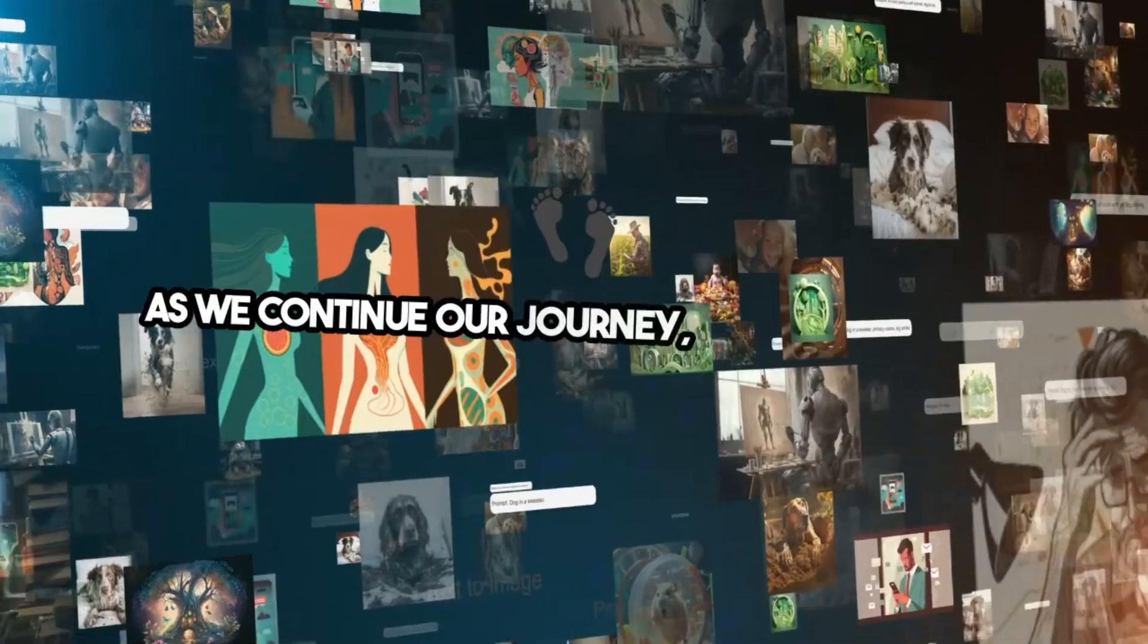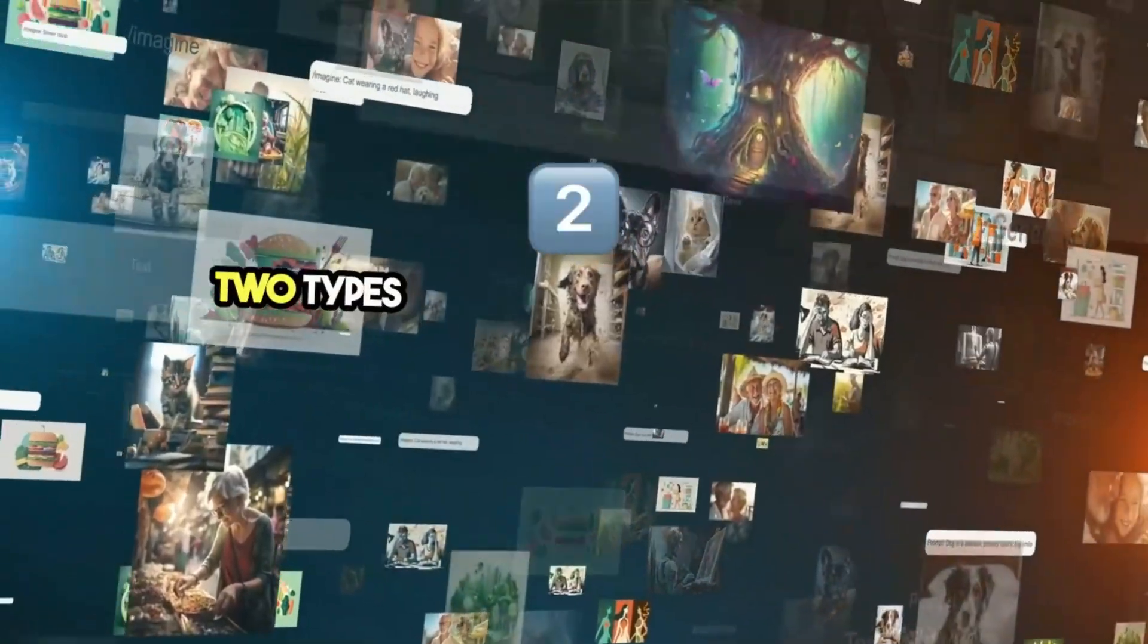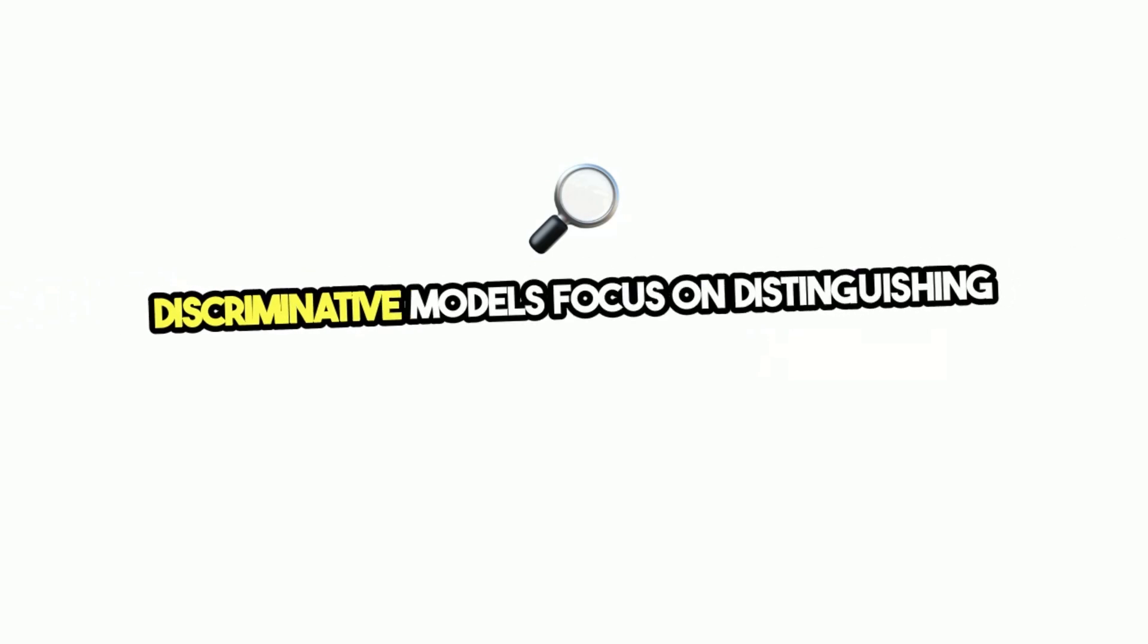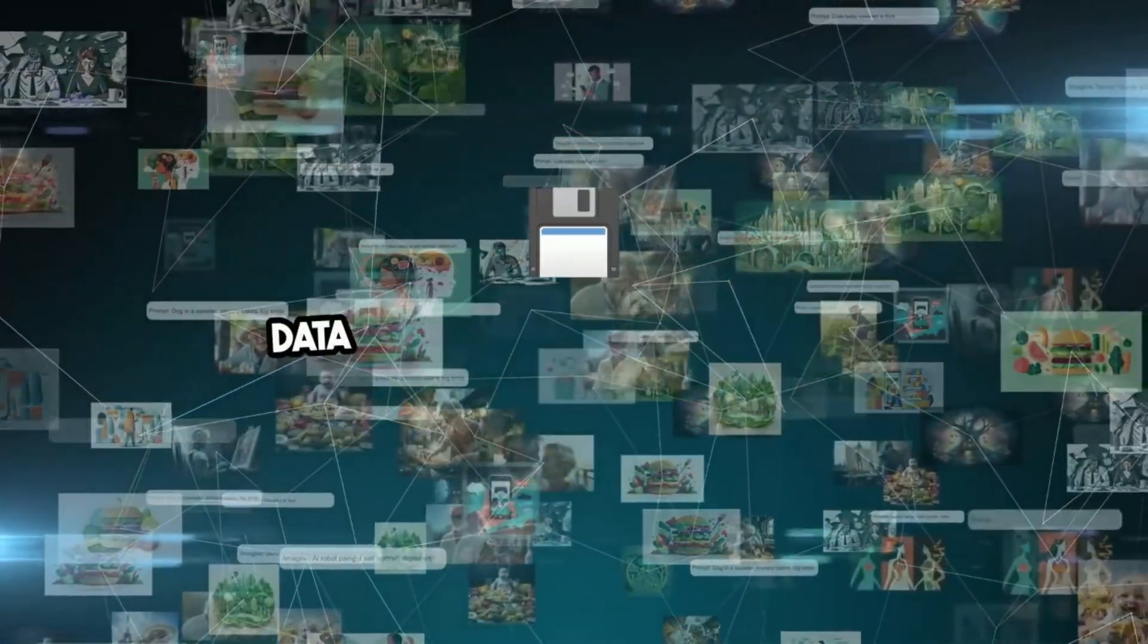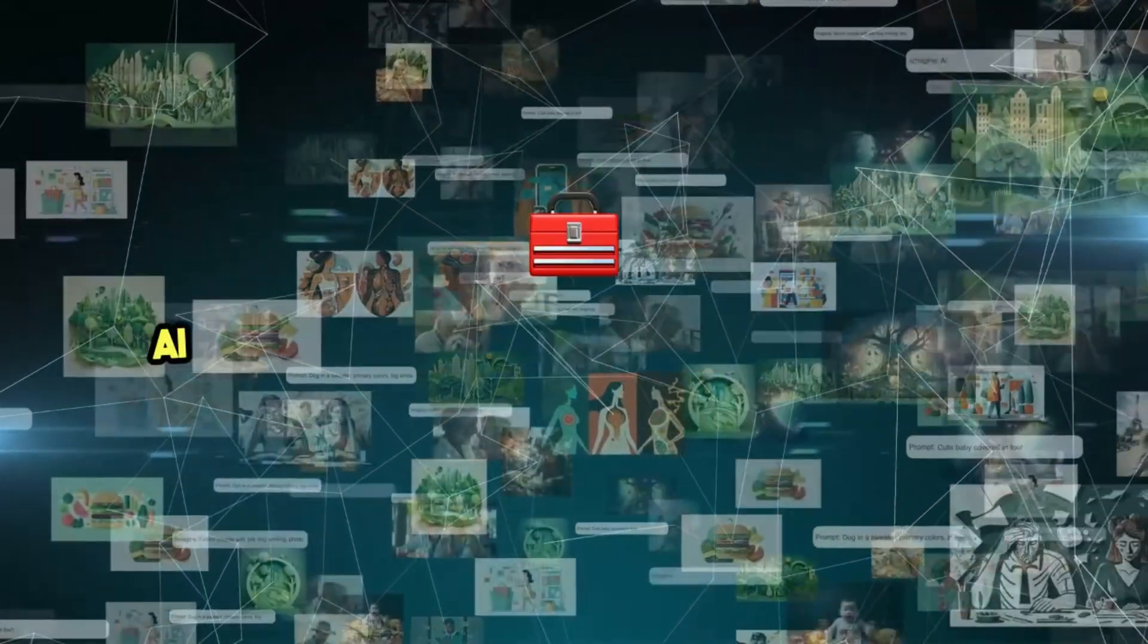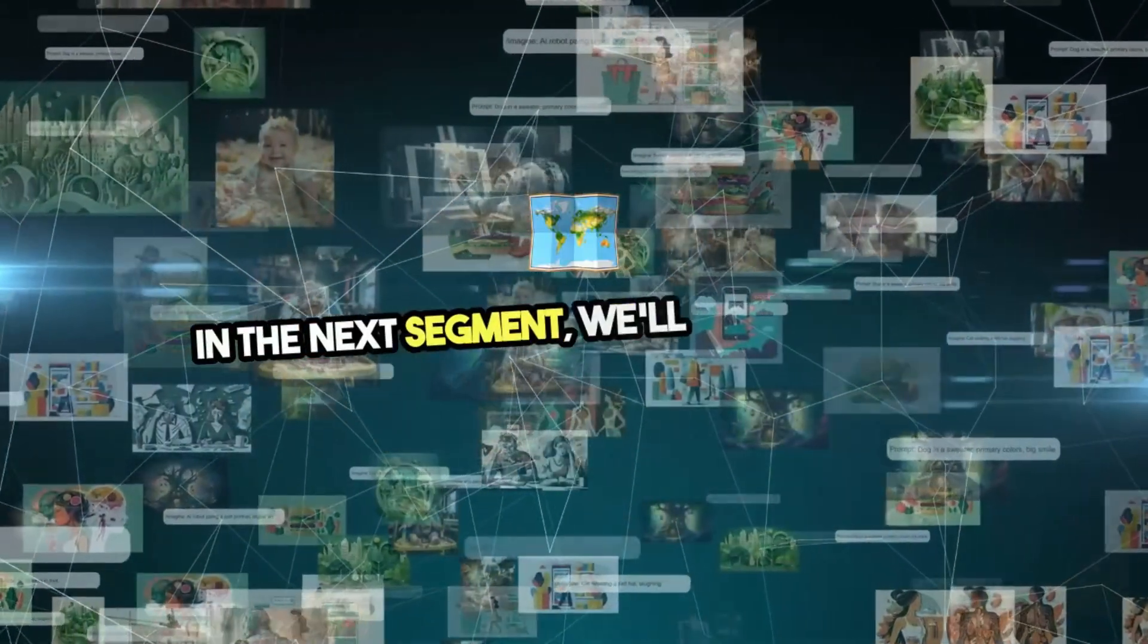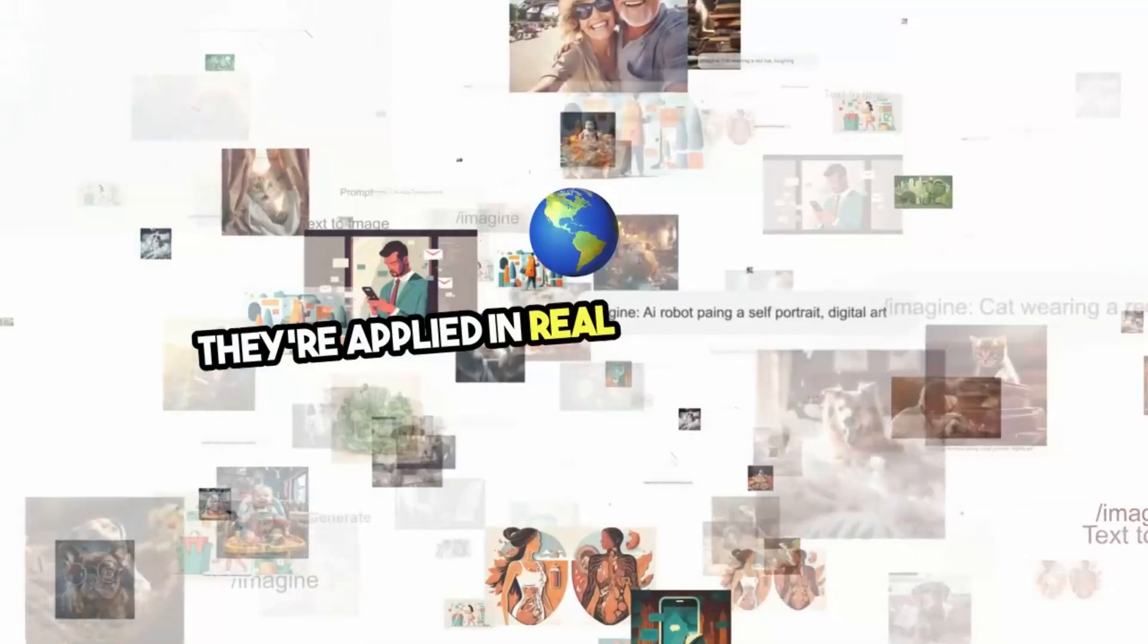As we continue our journey, it's important to understand how neural networks can be trained for two types of models: discriminative models and generative models. Discriminative models focus on distinguishing between classes, while generative models aim to create new data that resembles the original. These two approaches power many of the AI tools we use today, from recommendation systems to AI-generated artwork. In the next segment, we'll explore these two models in more detail, showing how they're applied in real-world scenarios.